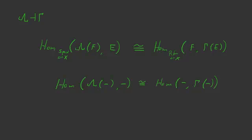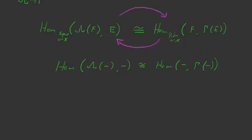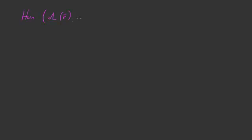So I want to just say what the maps are going to be. I'll give a map going from hom(λF, E) over to hom(F, γE), and I'll give another map going back in the other direction, and then I'm just going to claim that they're inverses to each other. Let's start with the map from hom(λF, E) into hom(F, γE) — I think this one is easier to define.